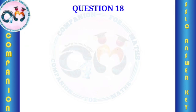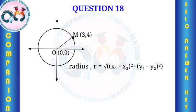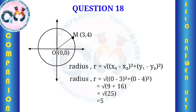The center is at the origin, with coordinates (0, 0). The point is (3, 4). The radius is the distance from the center to the point, using the distance formula: root of (x1−x2)² + (y1−y2)². The answer is 5 centimeters.